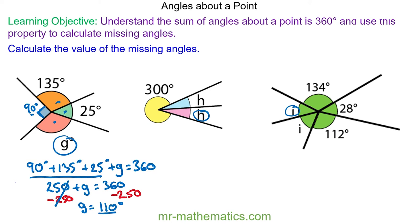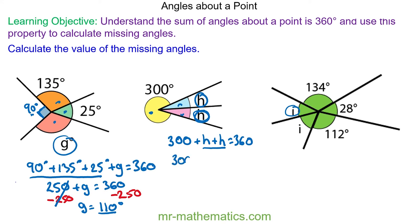For the next question, we know all three angles are angles about a point so they will add up to 360. So 300 plus angle h plus angle h will equal 360. Because they've been noted with the same letter, in algebra that means they have the same value, so we have 300 plus 2h equals 360.